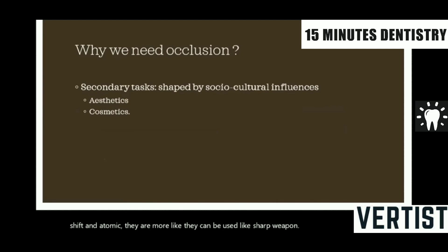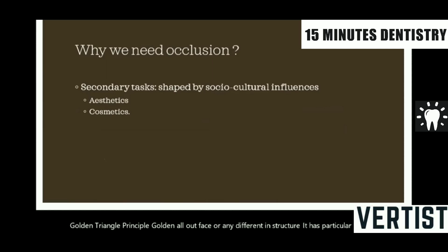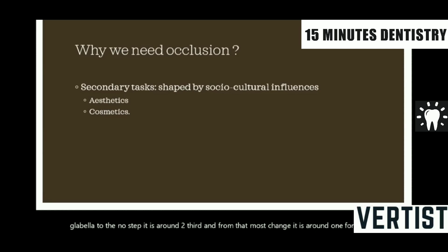There are secondary tasks like aesthetics and cosmetics. You must have heard about the golden proportion — any beautiful-looking structure has a particular golden proportion, and the same is applicable to our face. If you count the facial height from the glabella to the nose tip, it is around two-thirds, and from the nose tip to the chin it is around one-third. Occlusion maintains this lower part of the facial height, and if it alters by just one or two millimeters, it is going to cause an alteration in appearance.